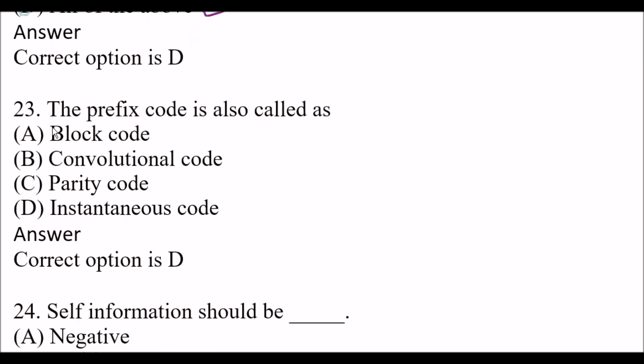Next question: The prefix code is also called as — Option A: block code. Option B: convolutional code. Option C: parity code. Option D: instantaneous code. The right answer is option D, instantaneous code.